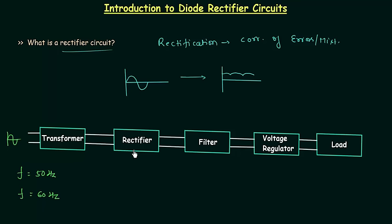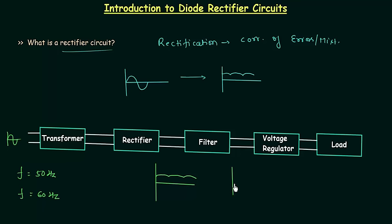The next block is the rectifier. As already explained, the rectifier circuit is used to obtain DC voltage. Once rectification is done, the output of the rectifier will be pulsating DC. The filter is used to smoothen out the pulsating DC, and once we use the filter we have DC voltage without any pulses.